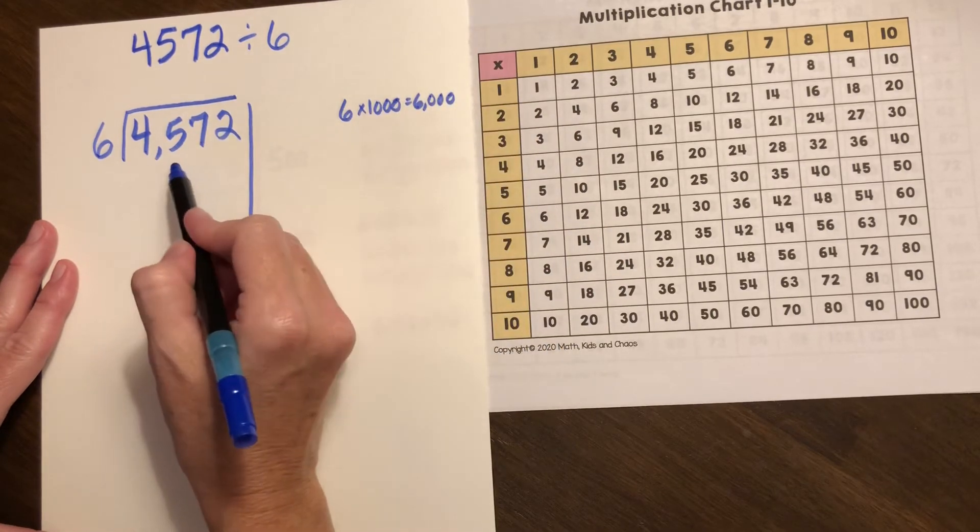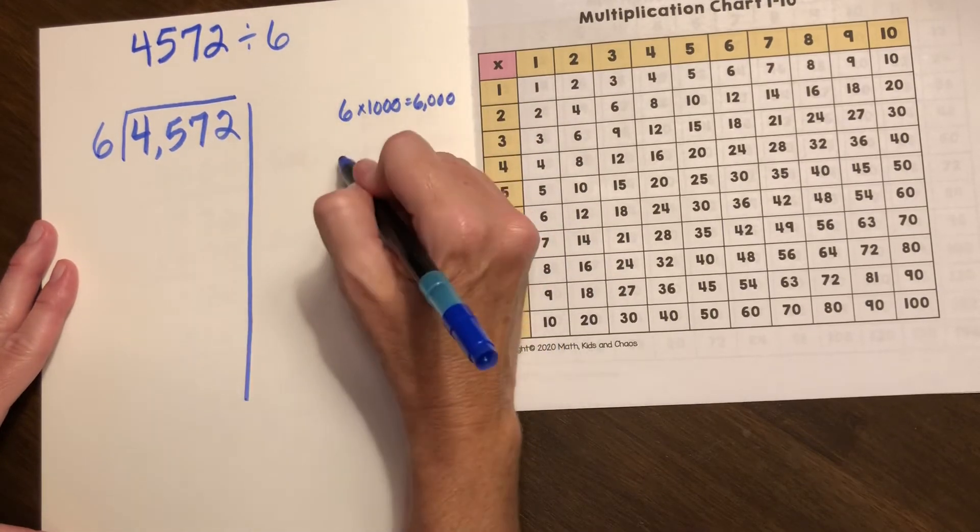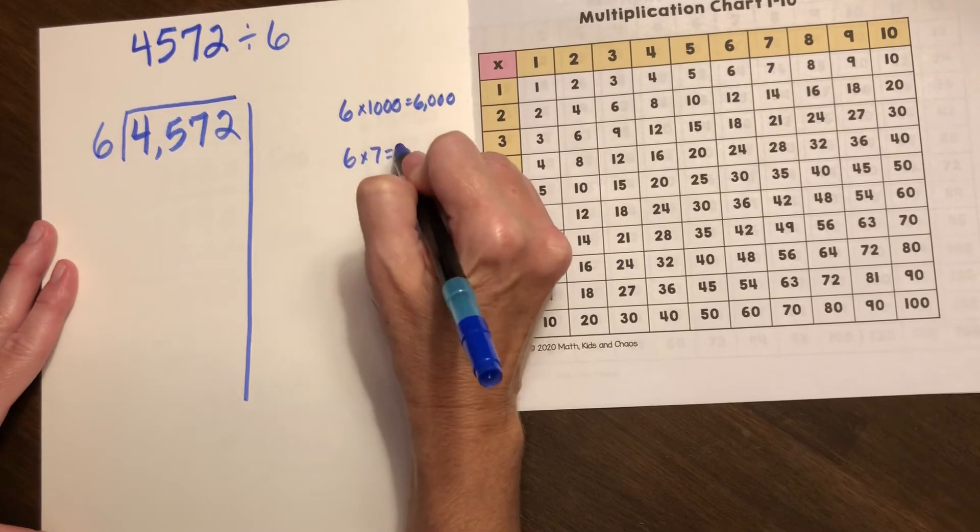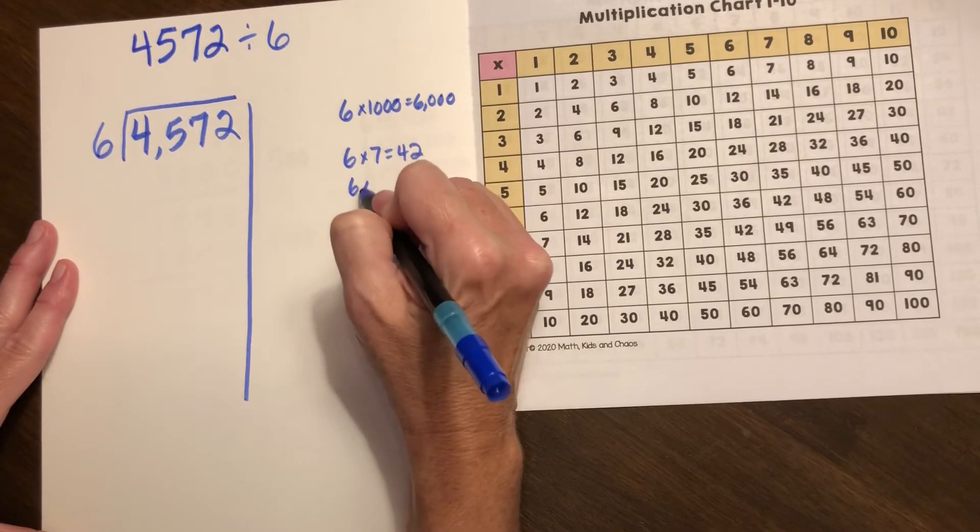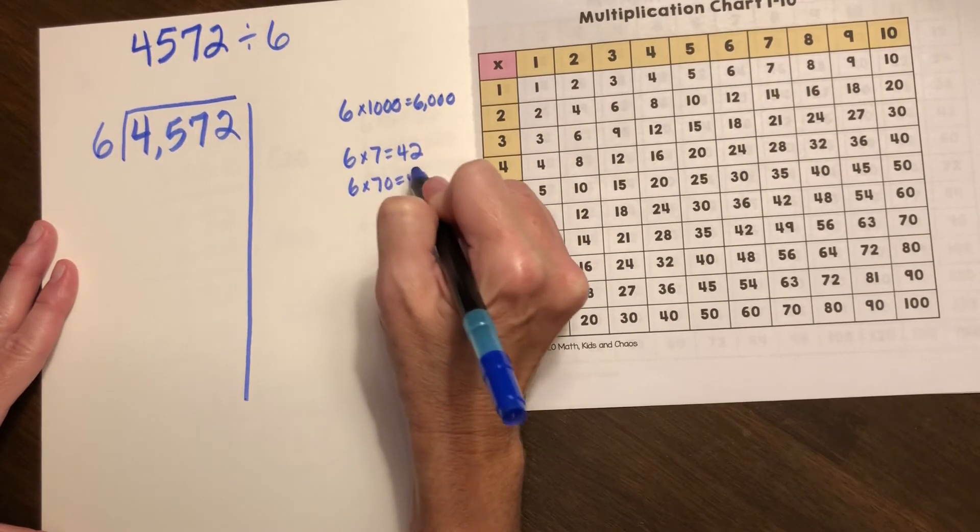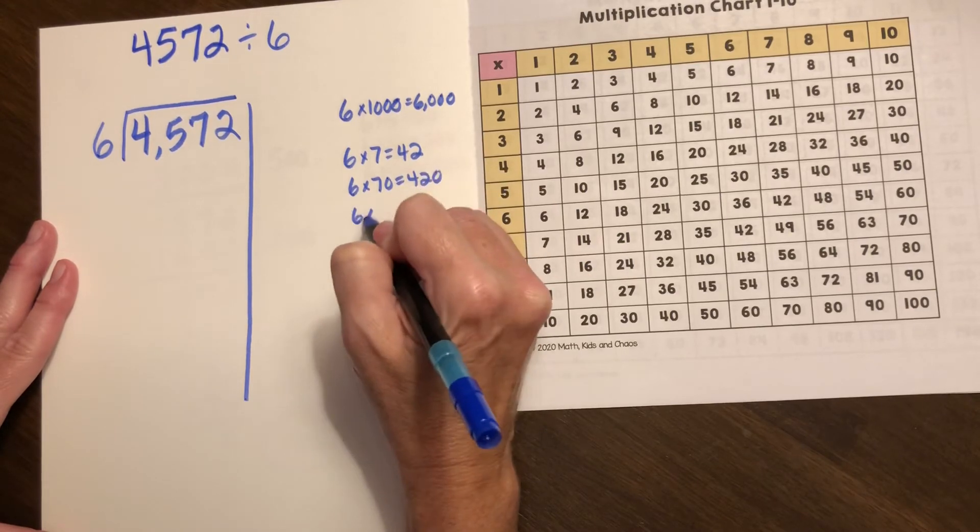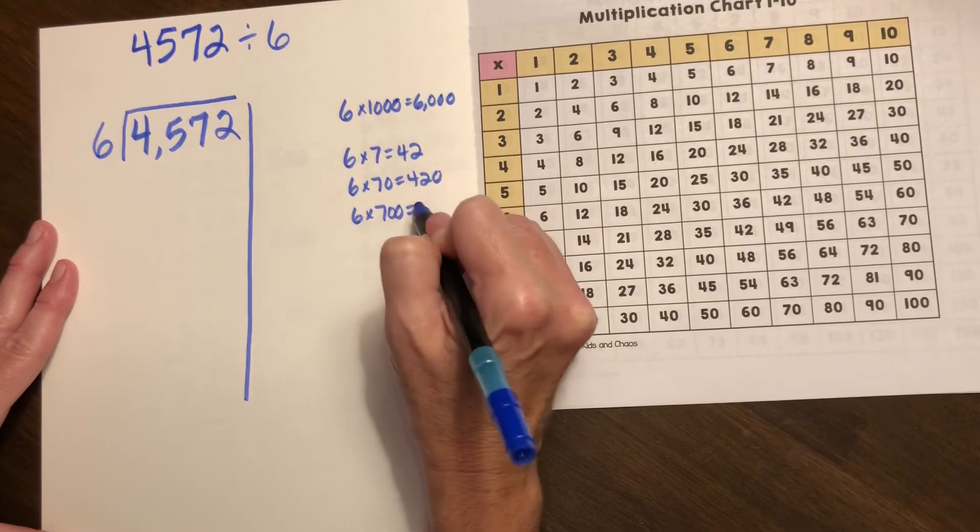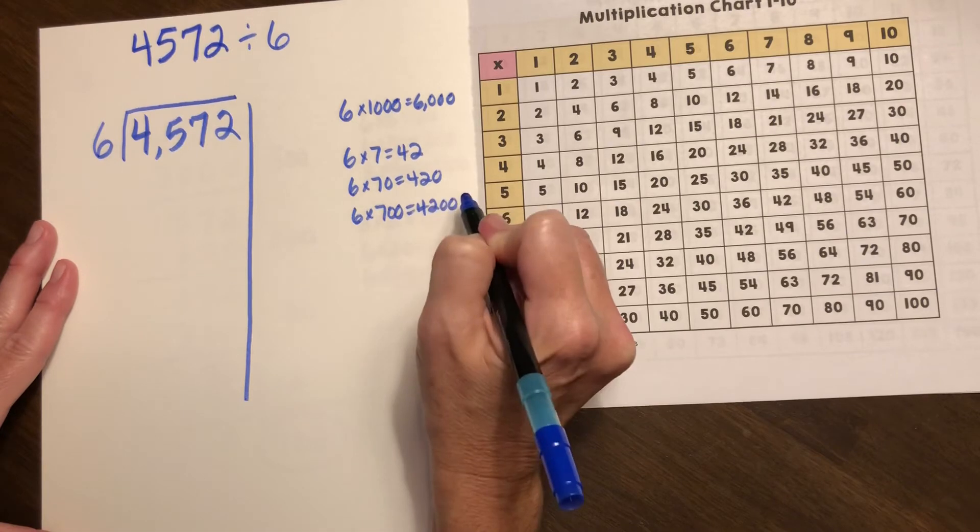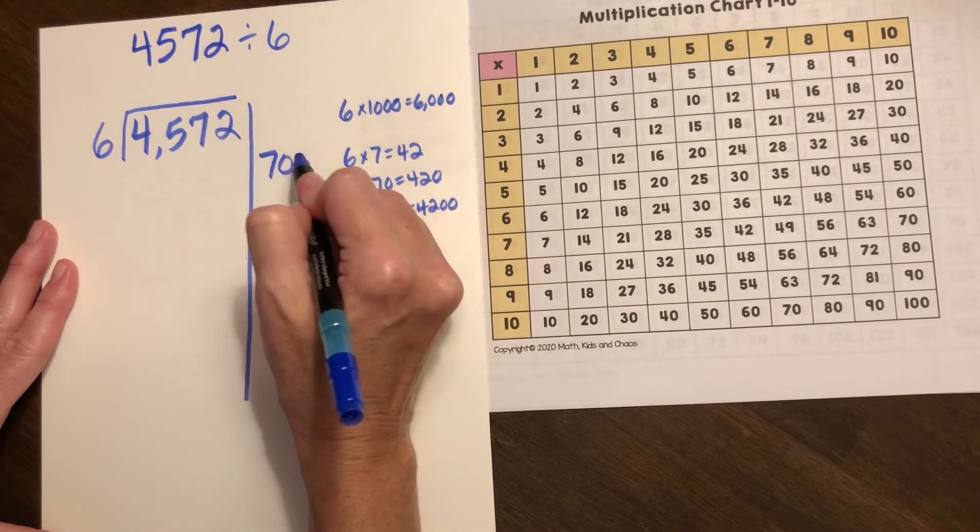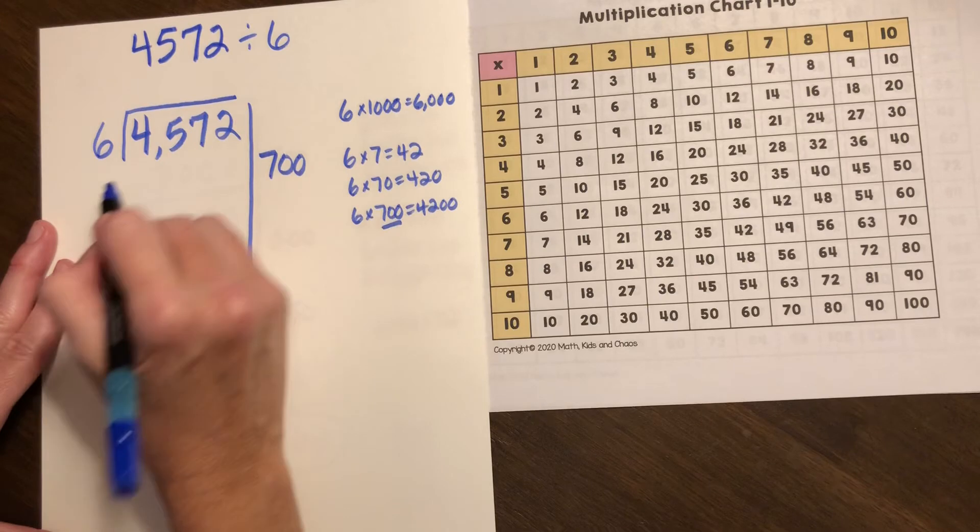I know my math facts of six times seven, so six times seven is 42, therefore six times 70 is 420 and six times 700 is 4200. So I know there's at least 700 groups of six.